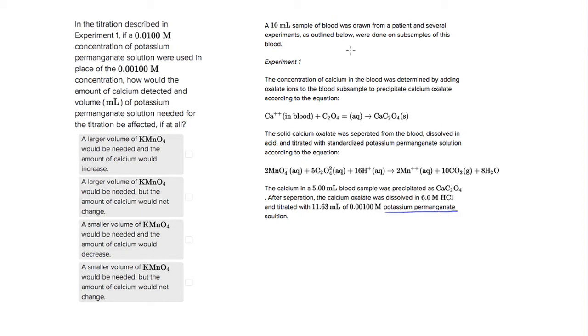And it's asking us, what if we used 0.01, a concentration of 0.01, instead of a concentration of 0.001? And how would that affect the amount of calcium detected?